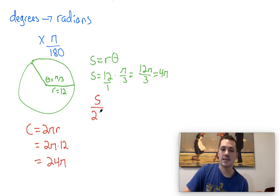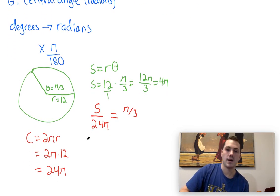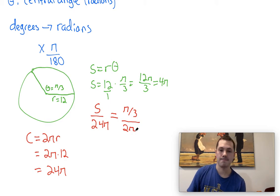All right, so then this is going to be S divided by 24 pi is equal to pi over 3, because remember that's our central angle theta, divided by 2 pi.